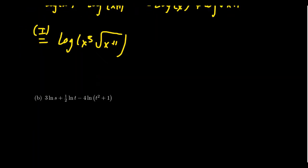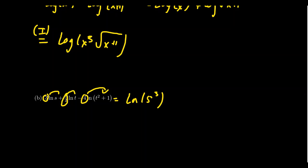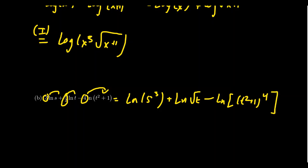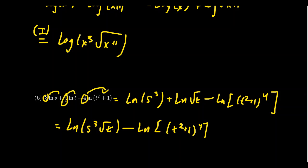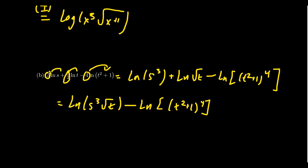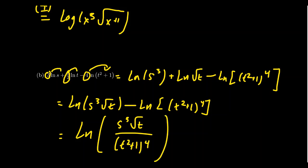For a three-term expression, we work one step at a time. Bringing the coefficients inside as exponents first gives ln(s³) plus ln(√t) minus ln((t² + 1)⁴). The laws only apply two at a time, so combining the first two using the first law gives ln(s³ · √t). Then, subtracting the third logarithm and applying the second law, we get ln of s³ times √t in the numerator divided by (t² + 1)⁴ in the denominator. This is the condensed logarithm.